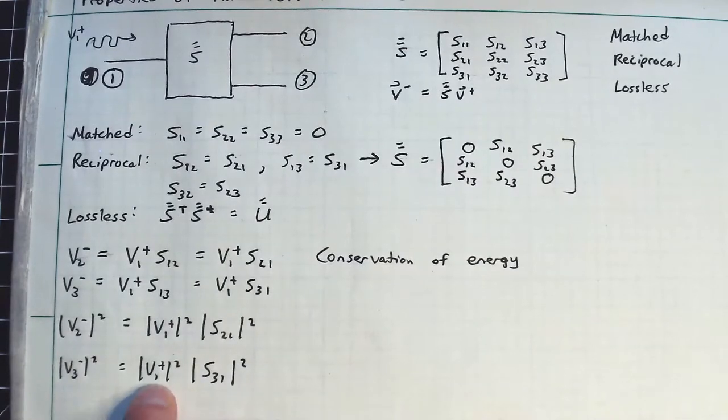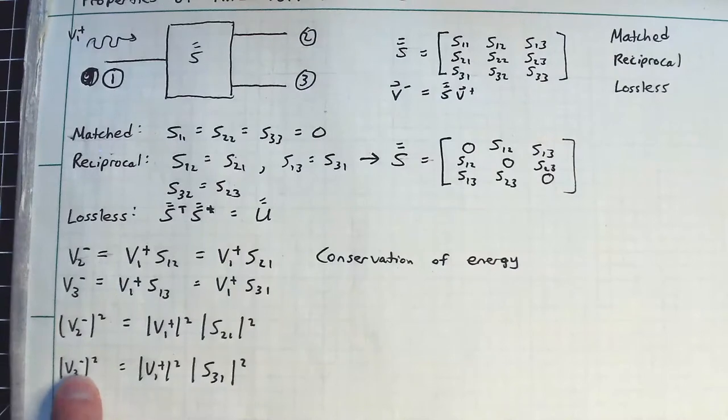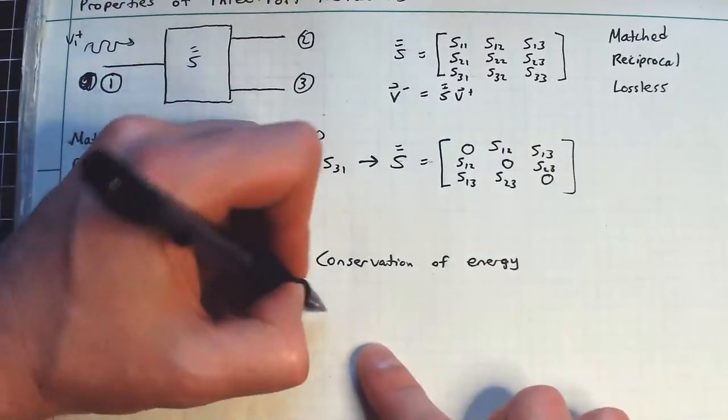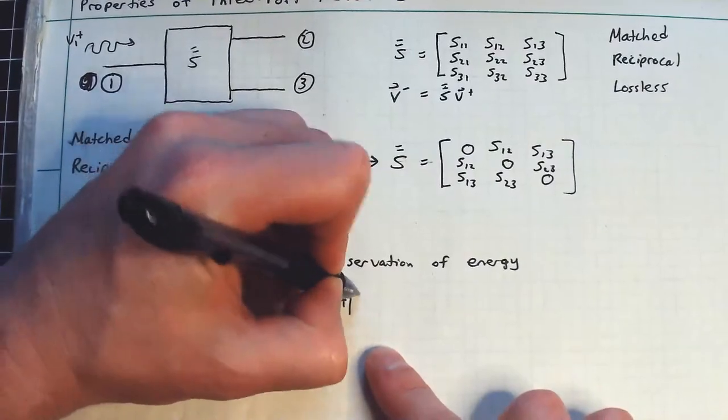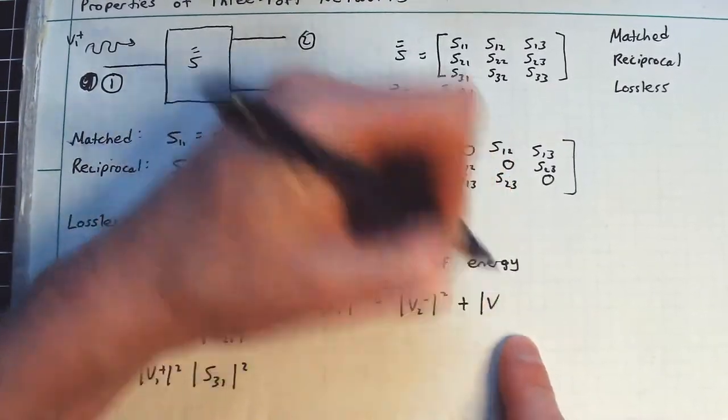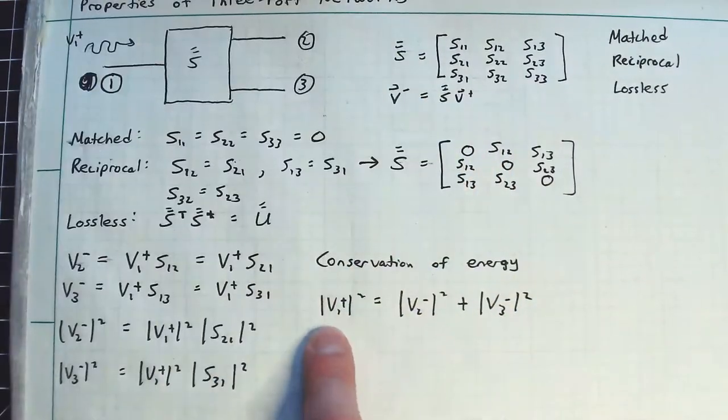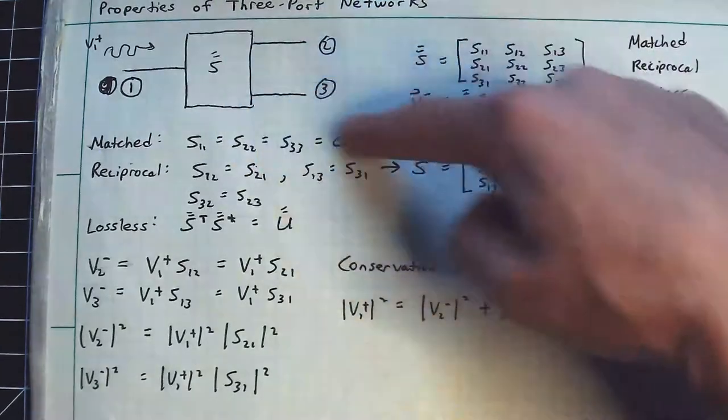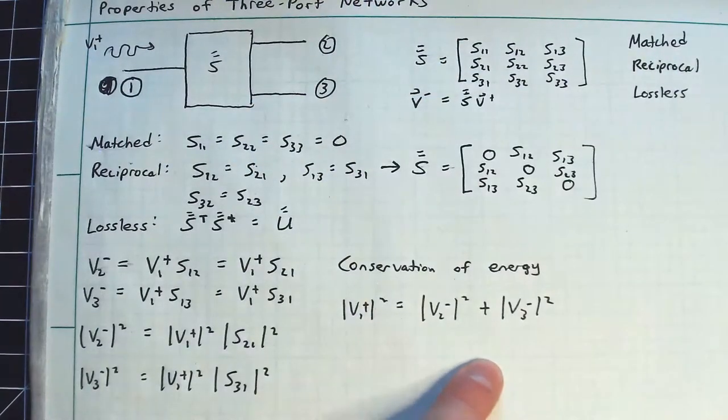So this is the power in this incident signal. This is the fraction of that power that gets split into node 3. And I'm now going to have to require, essentially, that |V1+|^2 is equal to |V2-|^2 plus |V3-|^2. So that's the power entering into node 1. This is the power leaving at node 2, and the power leaving at node 3, and they have to equal each other if I'm going to conserve energy.